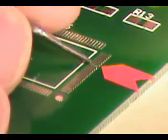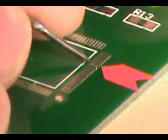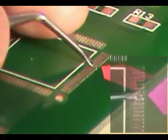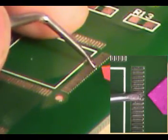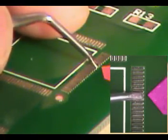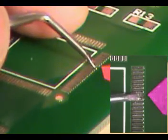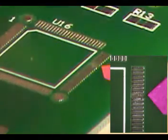This pad repair will demonstrate the replacement of a lifted pad using epoxy adhesive and a salvaged replacement pad. After cleaning the area with isopropyl alcohol, use a small fine point scraper to remove any old adhesive or remaining pad material.